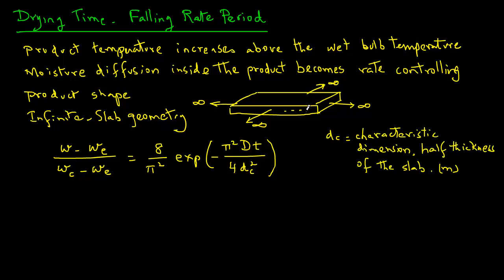As we can see in this infinite slab, the half thickness is shown here. Capital D is the effective mass diffusivity. This is the property of the food material being dried, and the units are meter square per second, and T is the drying time. We can rearrange the terms in this equation and write this expression in terms of T, time.